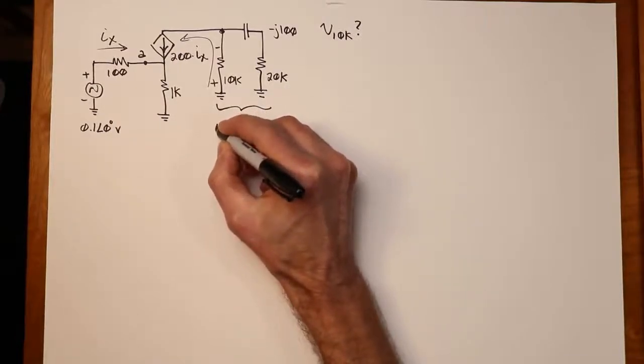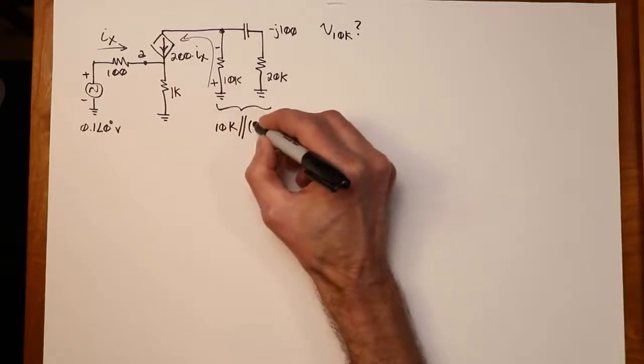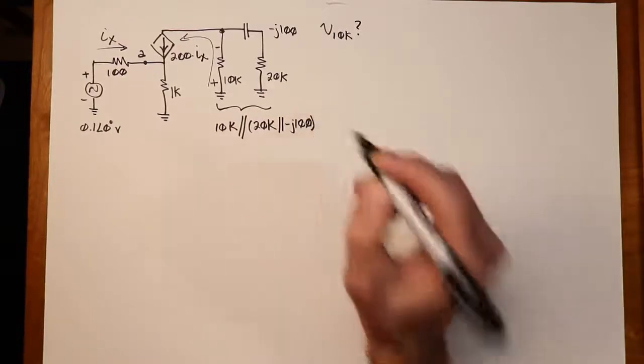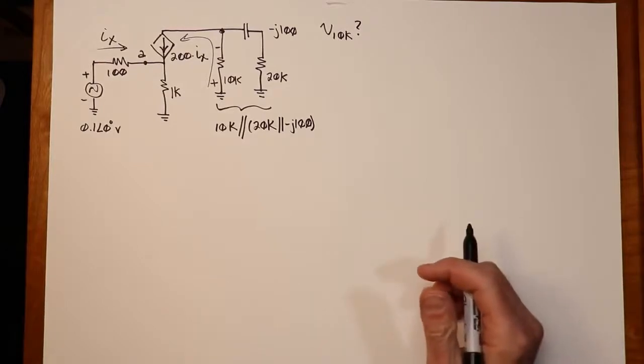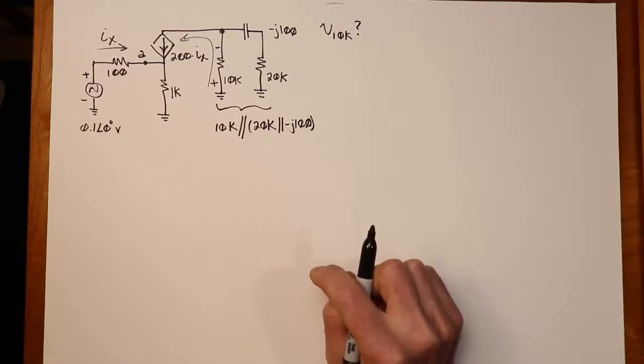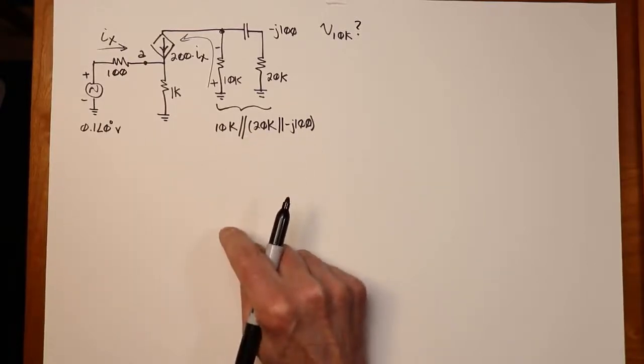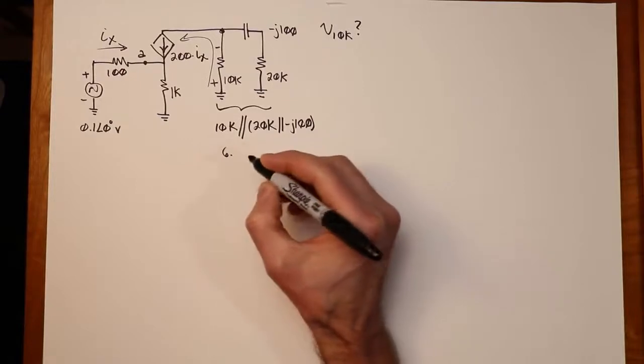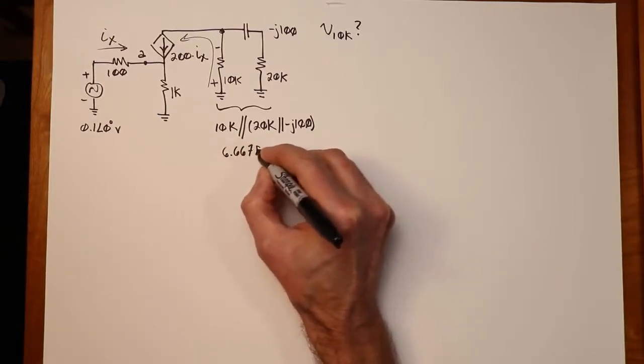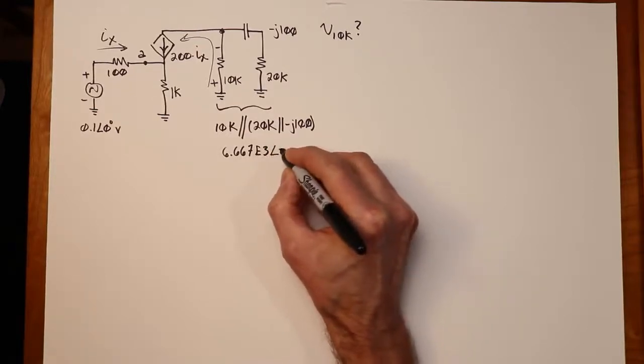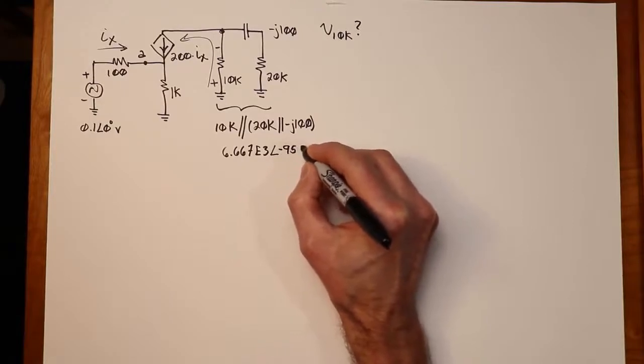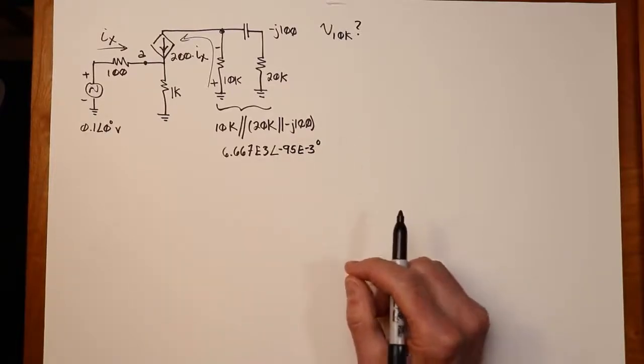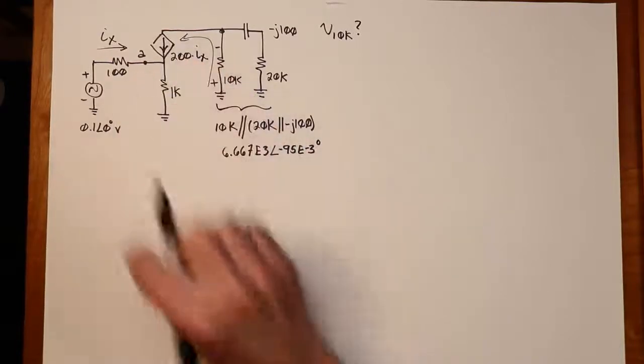So what is this? This is 10k in parallel with this series combo, which is 20k in parallel with minus J100. The minus J100 is not going to make a particularly large impact here, very slight change compared to that 20k in terms of the phase angle. This is really pretty close to 6 and 2 thirds k when you get all done with it. But if we want to carry it out, we can say that the result a little bit more accurately is 6.667k at an angle of negative 95 milli degrees. Pretty darn close to 6 and 2 thirds k ohms.